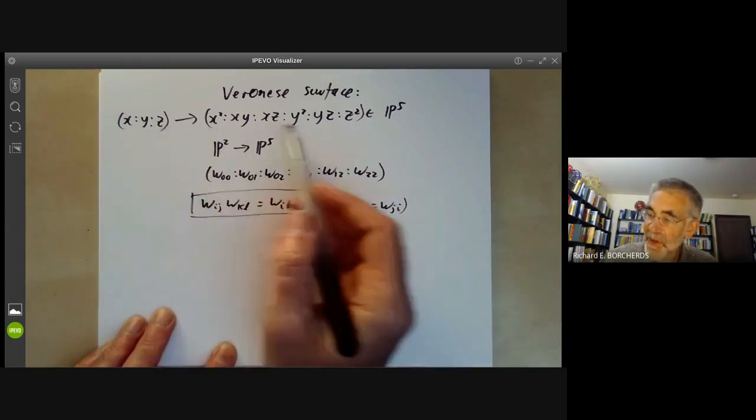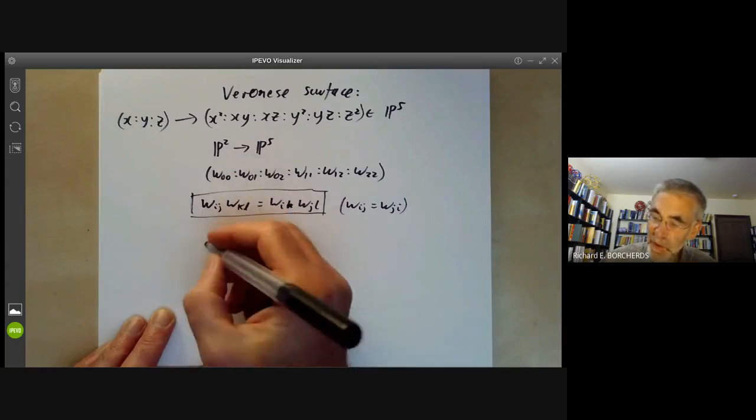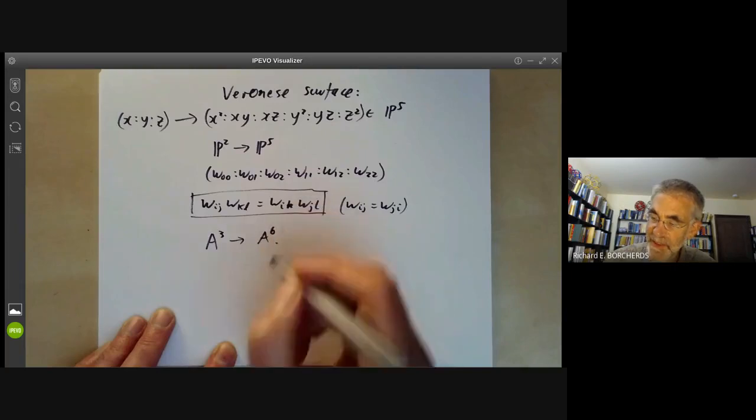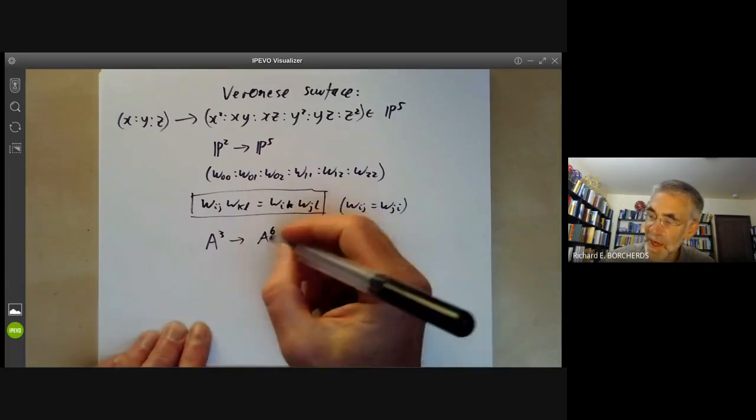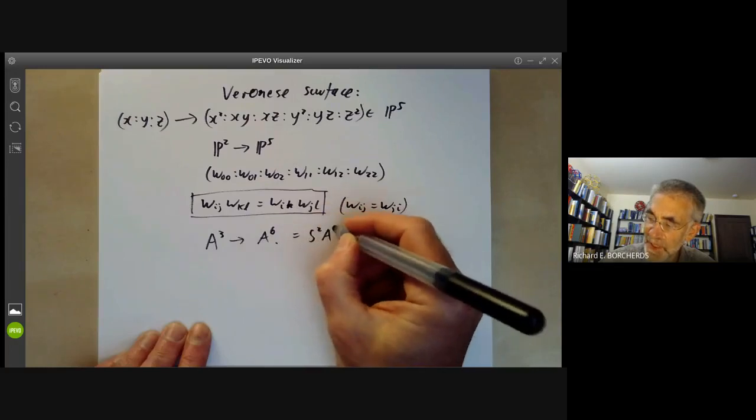This map can be regarded as a map from P2 to P5. We can also think of it as being a map from affine space A3 to A6 in some sense, where A6 we think of as being the symmetric square of the space A3.